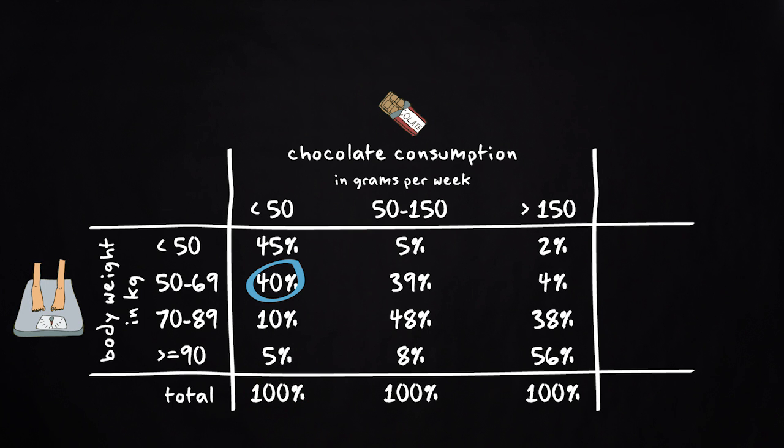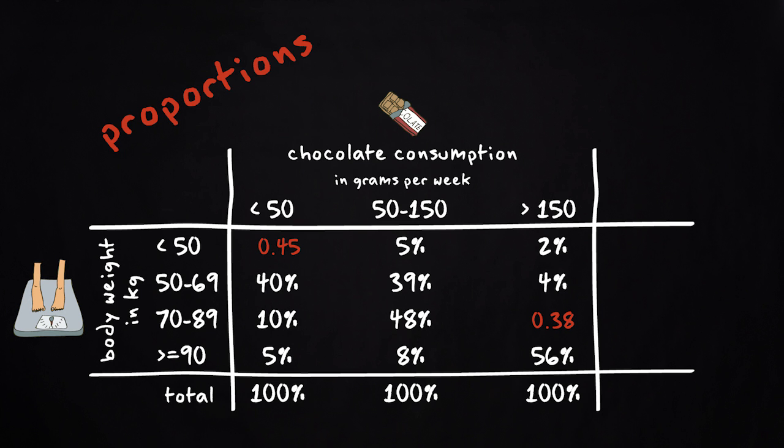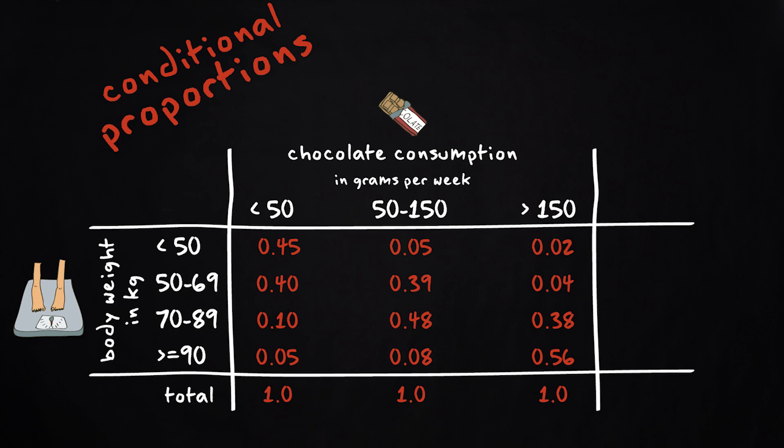We can also express these percentages as proportions. 45% then becomes 0.45, 38% becomes 0.38. We call these proportions conditional proportions, because their formation is conditional on another variable. In this case, that variable is chocolate consumption.